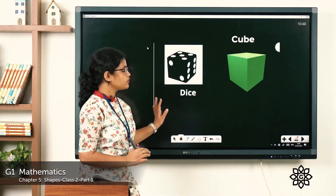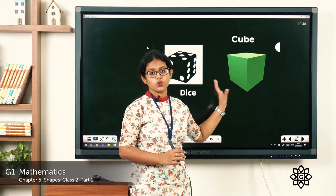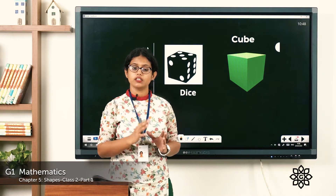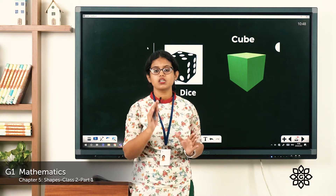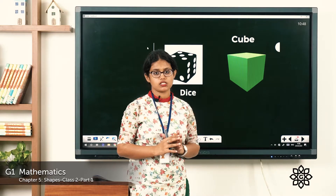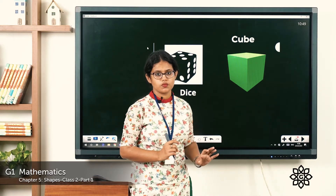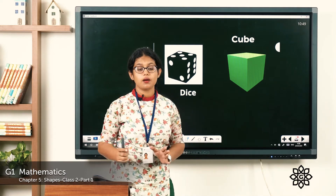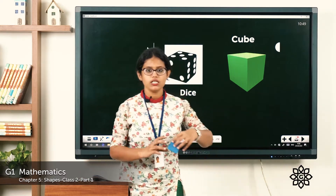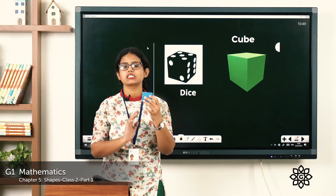Let's start with the first one. Do you know which shape this is? This shape is a cube. The first shape we learned in the last class about 2D shapes was the square — it has four equal sides. So the 3D shape of a square is the cube. A square has four sides, but a cube has six faces. You can see this is a cube and it has six faces.